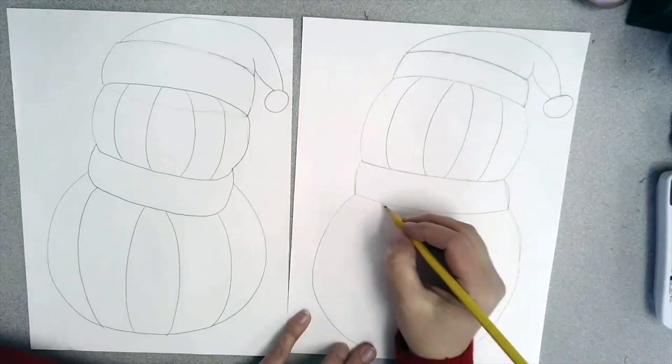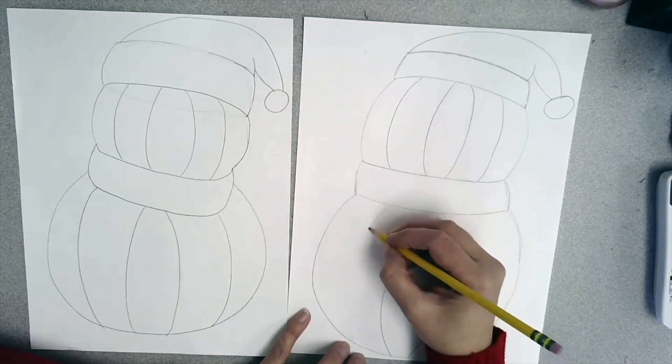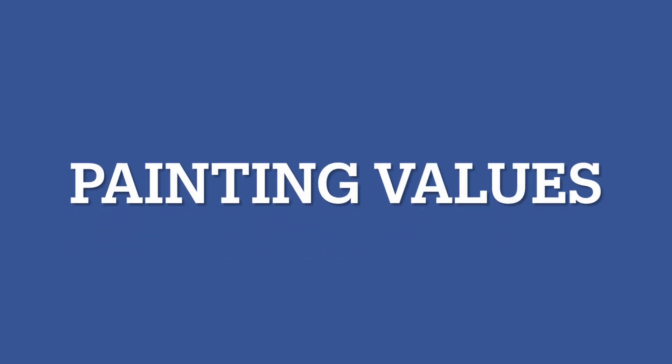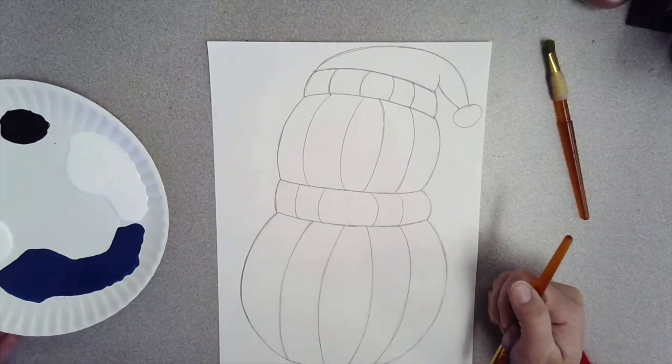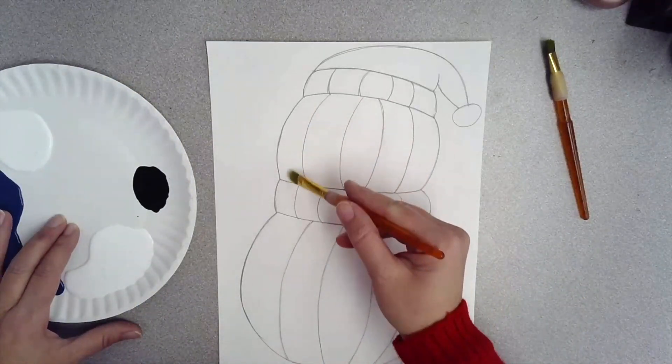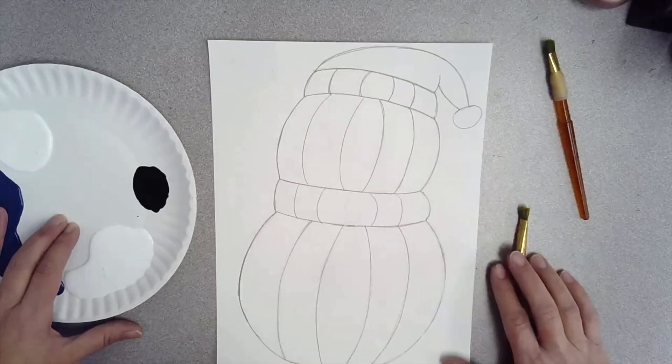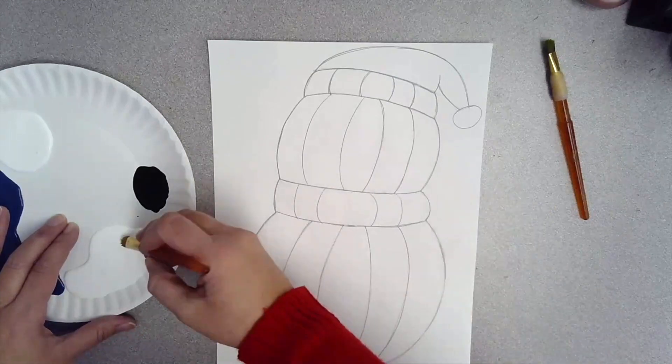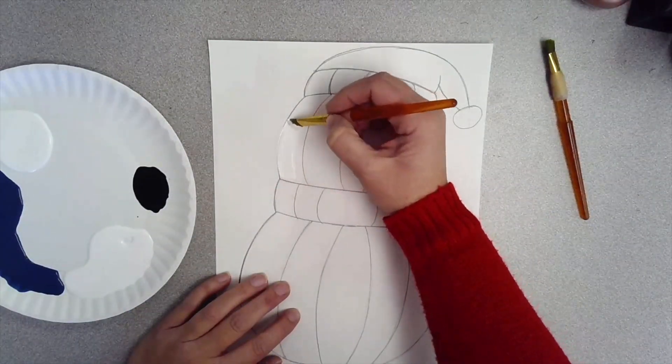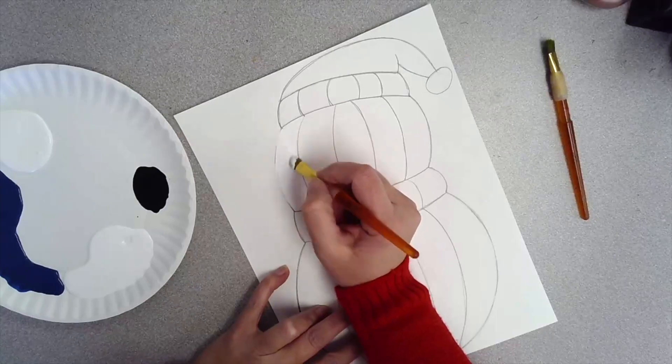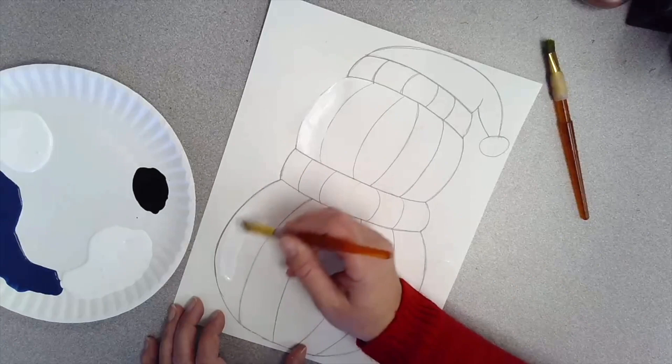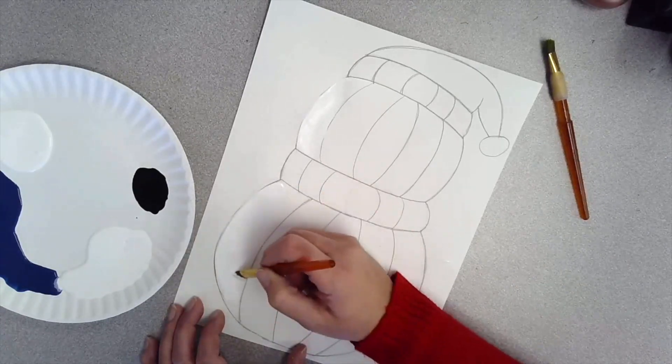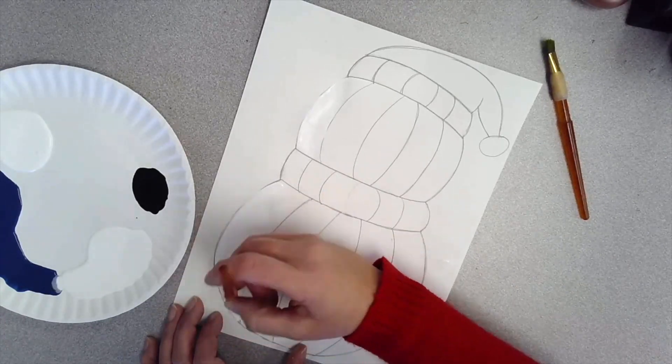Now we're going to draw four lines to make the sections of our snowman. Four lines equals five sections. Now we're going to start painting the values of our snowman. The first value that we're going to start off with is plain white without any black in it. We want to go from white to a darker gray on the other side. So start by painting the first section on the very left with the white.